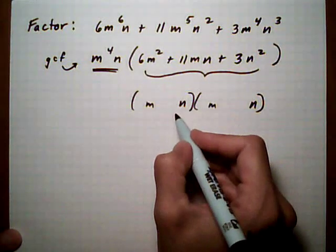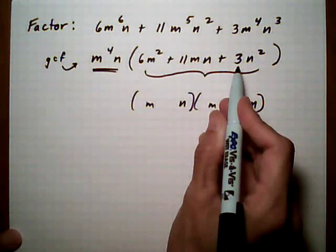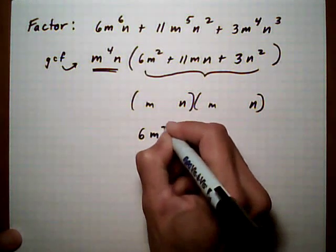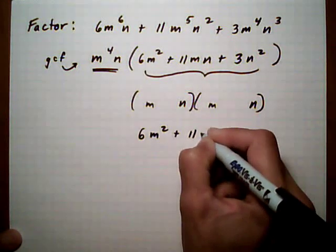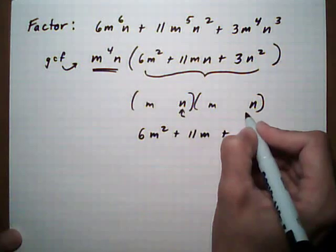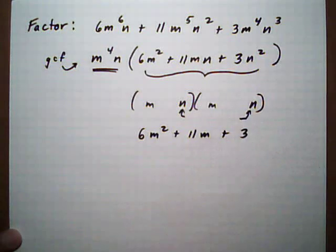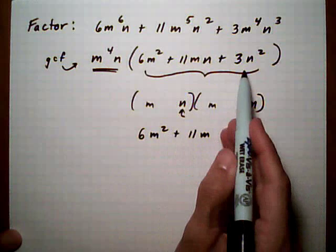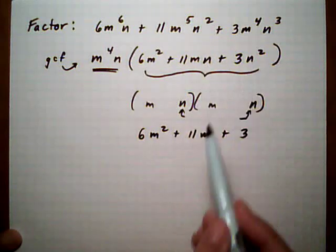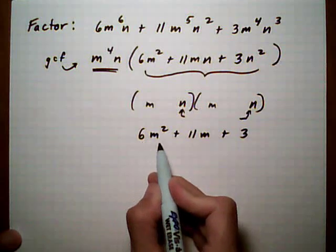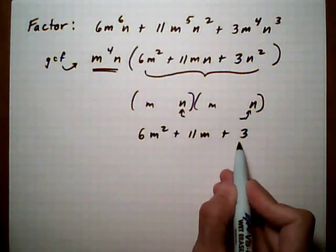So what I'm going to do is just forget about the n for now to make the factoring look a little bit easier. I'm going to write 6m squared plus 11m plus three. And then when we're all done, we're going to insert the n here and here at the last two spots to make sure that when we multiply everything out, we would get the n squared back again. All right, so we're going to factor 6m squared plus 11m plus three.